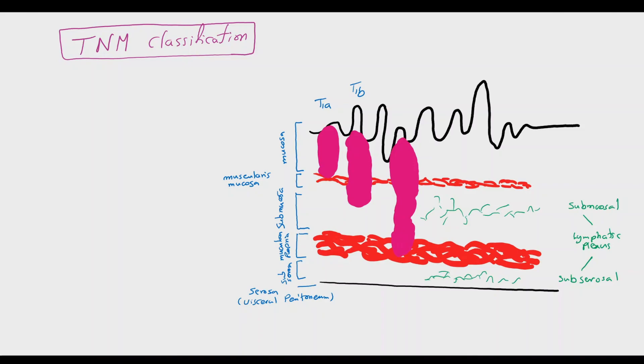T2 tumor reaches the muscularis propria. T3 tumor penetrates the muscularis propria and reaches the subserosa.